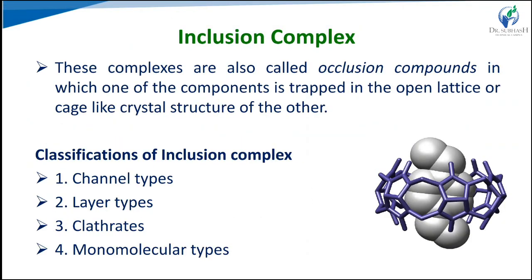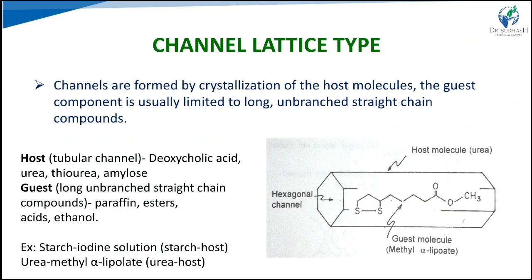The third main type is inclusion complexes, also called occlusion compounds or complexes. In these, one component molecule is trapped in the open lattice or cage-like crystal structure of the other. They are further classified as: channel type, layer type, clathrate, and monomolecular types. In the channel type, they are formed by the crystallization of host molecules, and the guest component is usually limited to long, unbranched linear chain compounds.